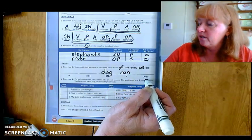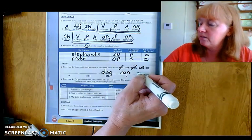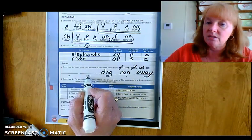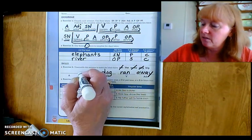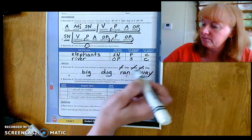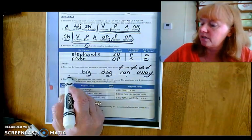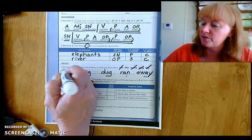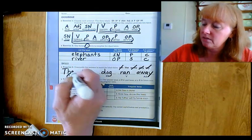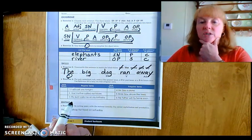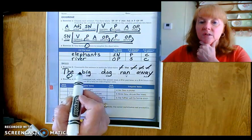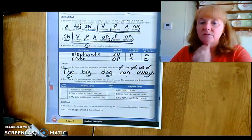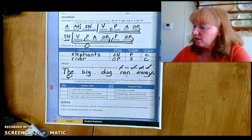And where did it run? Away. What kind of dog was it? It was big. And what goes here? We have an article adjective. There's only one thing left. And we need to remember to start with a capital letter. Now let's read our sentence and make sure it makes sense. The big dog ran away. And what do we need at the end? Period. Very good.